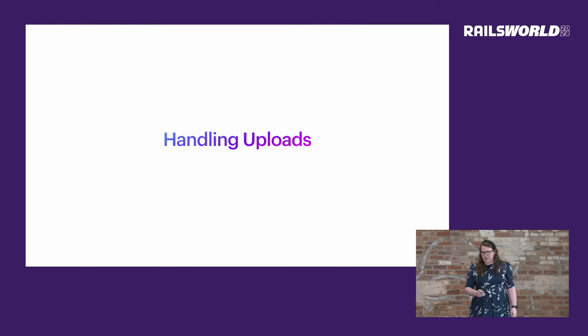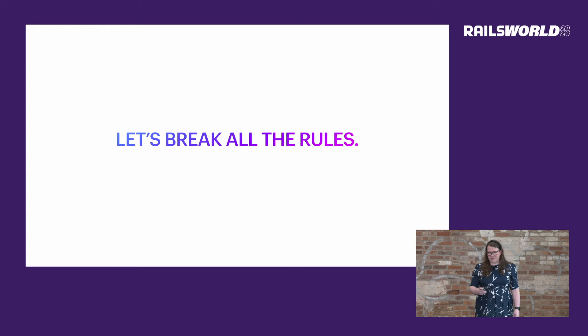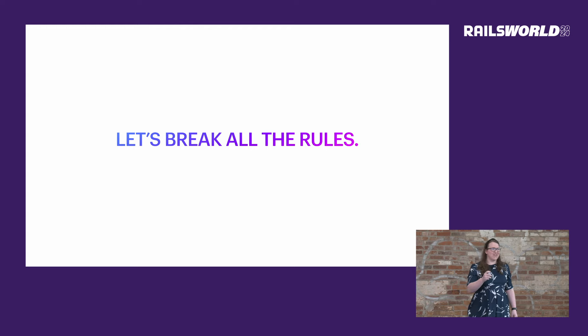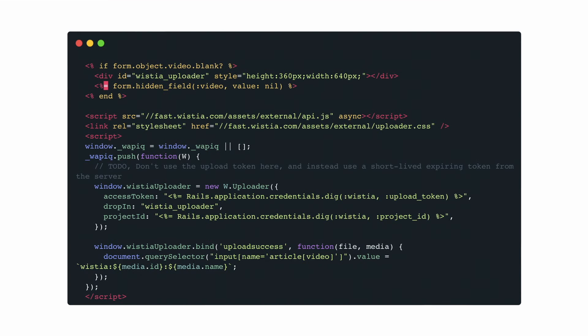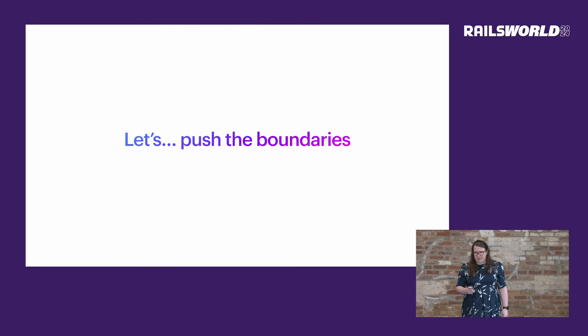The next step is to handle the actual file upload using Wistia's uploader widget. We integrate the Wistia JavaScript API into our form — and as a note, we're embedding a token directly, which you shouldn't do in production; you should use a short-lived expiring token. We use the Wistia uploader widget to handle file uploads from the client side, and on the upload success event, we pass the media ID and name to the backend in the format: Wistia colon hashed ID colon file name. This string will be parsed by the backend later.